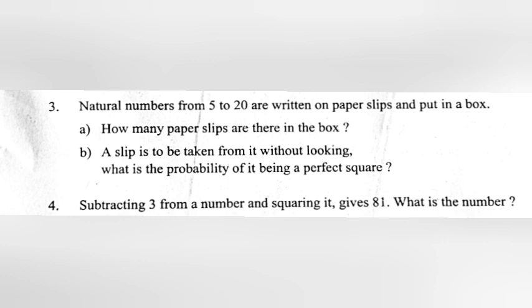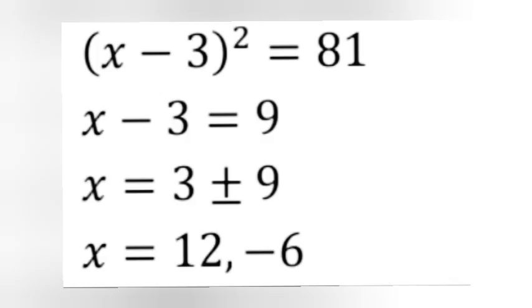Question 4: Subtracting 3 from a number and squaring it gives 81. What is the number? Answer: (X minus 3) squared equals 81, equals 9 squared. Therefore X minus 3 equals 9, so X equals 3 plus or minus 9. If X equals 3 plus 9, X equals 12. If X equals 3 minus 9, X equals minus 6.